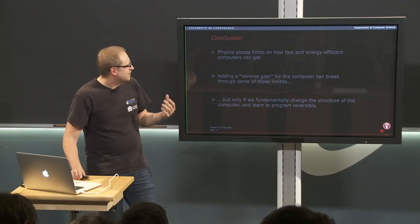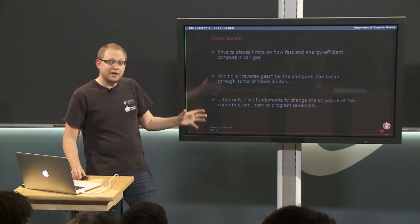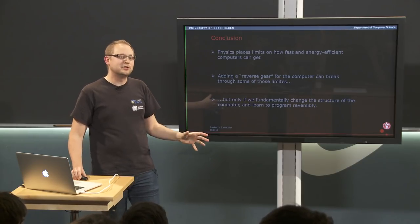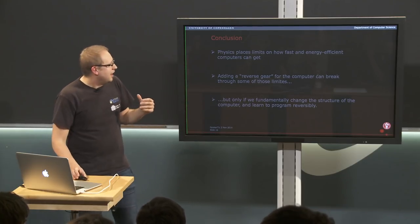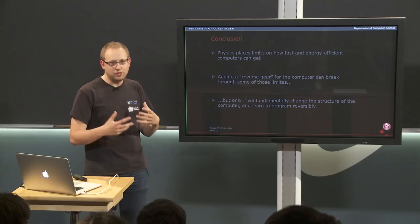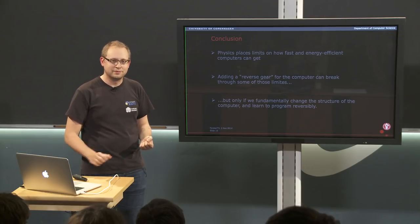The upshot is that physics has placed some limits on what we can actually do with computers — it's not simply a matter of being smart. There are physical limits to how efficient we can be in computation. And surprisingly, by doing something as intuitively simple as adding a reverse gear for our computers, we can break through some of these limits. But it requires that we fundamentally alter how we build computers and how we think about computation in order to learn to do reversible computations. Thank you.